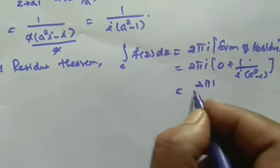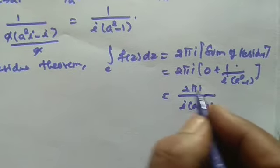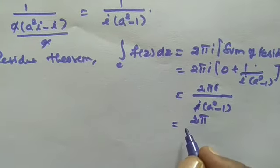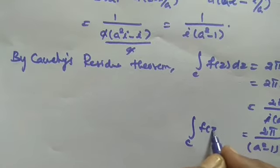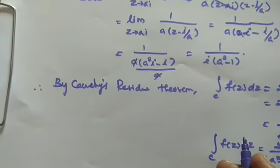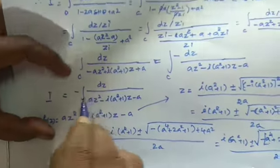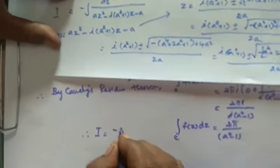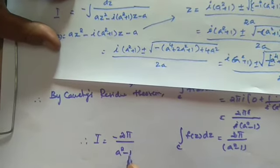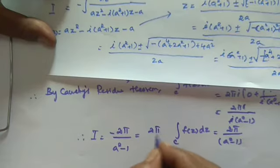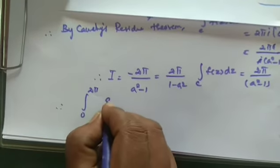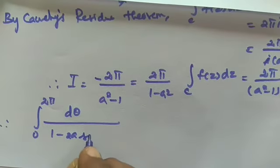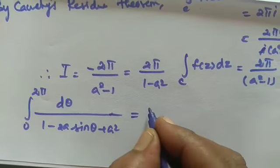Therefore the integral I equals 2πi times 1 divided by i times (a squared minus 1), which simplifies to 2π divided by (a squared minus 1).